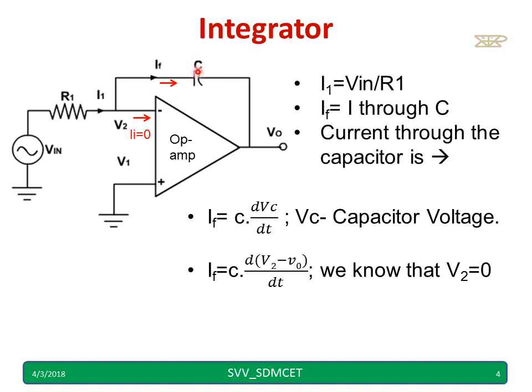Now the voltage across the capacitor is given by V0 and V2. This is the difference between V2 and V0 because current is flowing like this. Hence it is V2 minus V0. We also know that V2 is equal to 0. Hence IF equals, I will rewrite, it is minus C dV0 by dt.